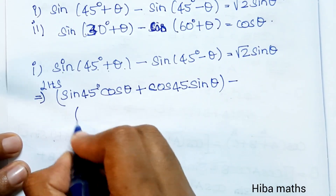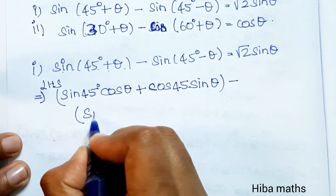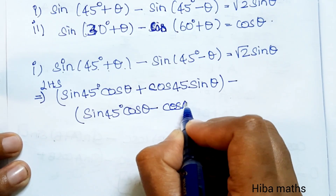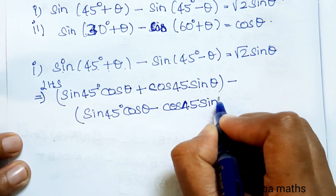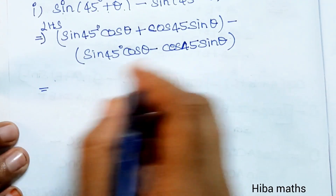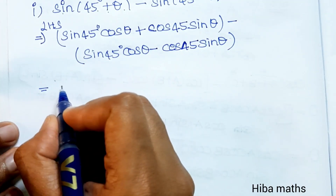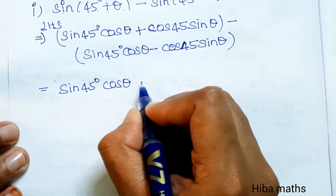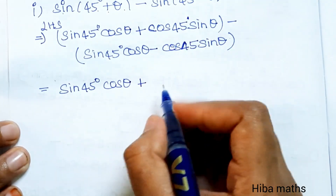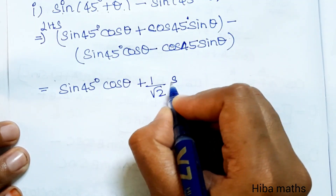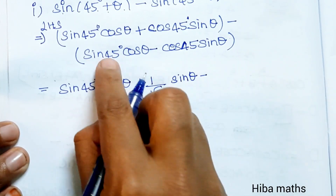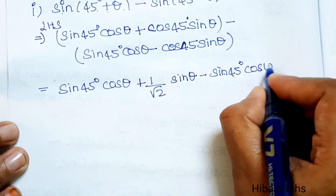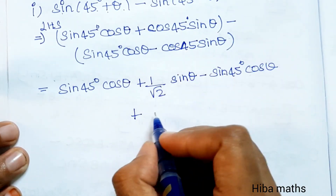For sin(A-B): sin A·cos B minus cos A·sin B. Substituting values at the line level: sin(45°)·cosθ plus cos(45°)·sinθ, where cos(45°) equals 1/√2 and sin(45°) equals 1/√2. So we get sin(45°)·cosθ plus (1/√2)·sinθ minus sin(45°)·cosθ minus cos(45°)·sinθ.